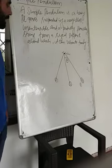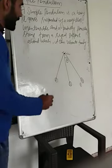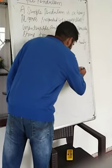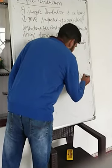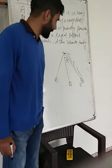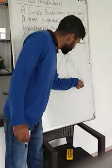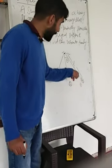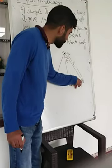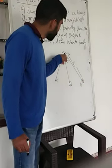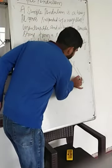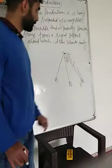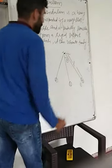In this simple pendulum we define a term called the length of the pendulum. The length of a pendulum is defined as the distance from the center of mass of the bob to the point of suspension. We represent it by L.